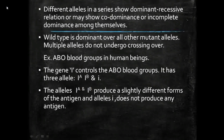Different alleles in a series show dominant or recessive relations, or may show co-dominance or incomplete dominance among themselves. The wild type is dominant over all other mutant alleles. Importantly, multiple alleles do not undergo crossing over, unlike other normal genes — this is a very important point about multiple alleles.